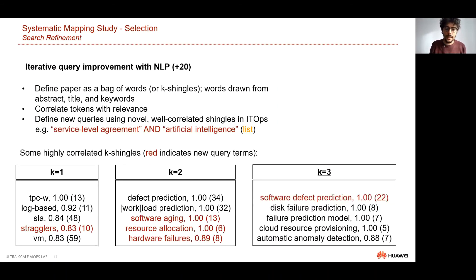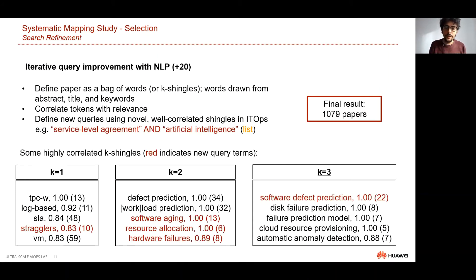In the end, keeping count across all steps, we have a total of 1,079 papers in our final AIOps result set, and this is where we conduct our analysis.